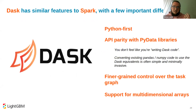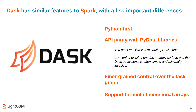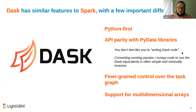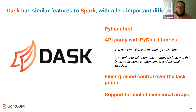This is where Dask comes in. Dask has similar goals to Spark — giving you an API that looks like you're operating on data on your machine, but actually distributing computations over a cluster. One of the really nice things about Dask compared to PySpark is that Dask libraries maintain API parity with the PyData ecosystem: a Dask DataFrame looks very similar to a pandas DataFrame, Dask array looks like NumPy, Dask ML's GridSearchCV looks and feels like scikit-learn. Everything is Python all the way down — no Scala stack traces.